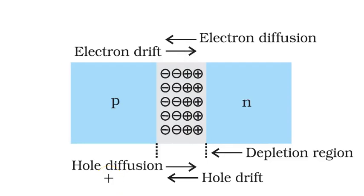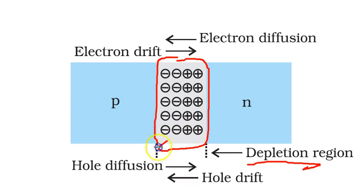We have also seen that such recombination results in a region which is depleted of mobile charges and is called the depletion region. This is the depletion width represented by W.